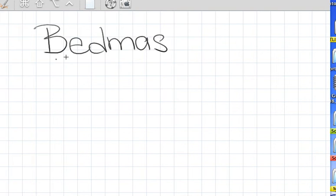BEDMAS is a term we use to remember the correct order of operations when doing a math equation. So the B in BEDMAS stands for brackets, the E for exponents, D for division, M for multiplication, A for adding, S for subtracting.